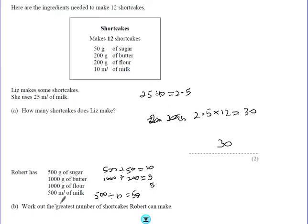So we want to know the greatest number of shortcakes Robert can make. Really, the butter and the flour restricts how many he can make, because he's only got enough to make 5 of these recipes. So it's 5 recipes is the most he could make. And each recipe makes 12 shortcakes. So it's 5 times 12, which is 60. Okay, how does that sound? Thank you.